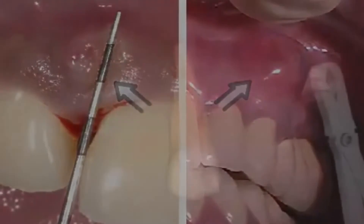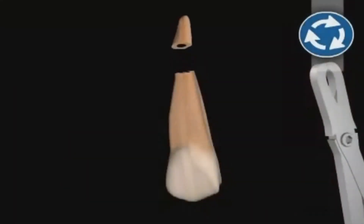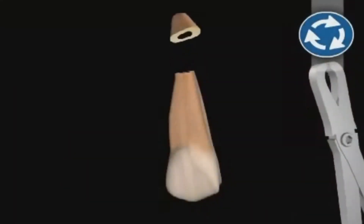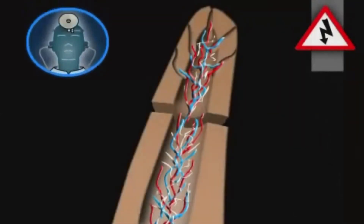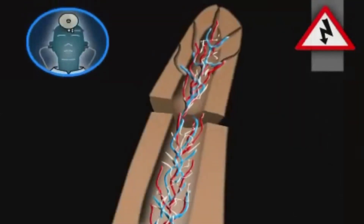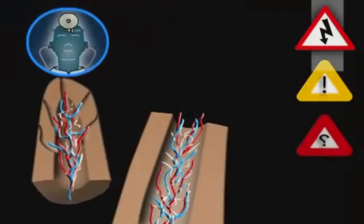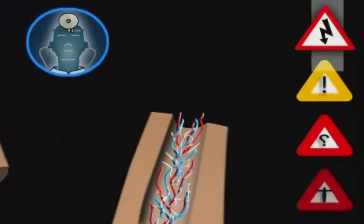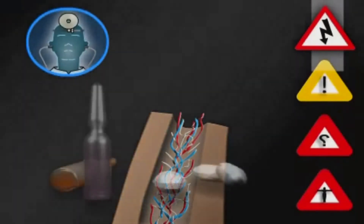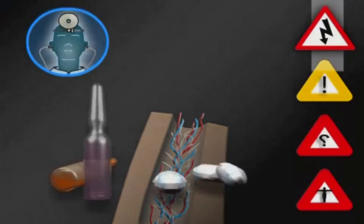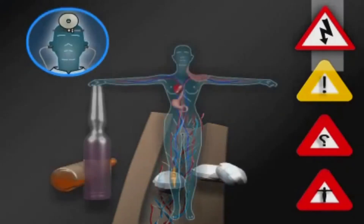An alternative to this surgery would be tooth extraction. The risks associated with root tip resection are negligible if it's performed by an experienced surgeon. However, there can be complications in isolated cases that may require additional measures to be taken, and those can eventually be life-threatening.